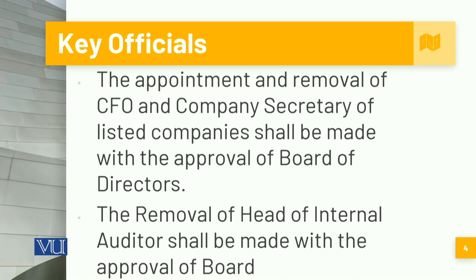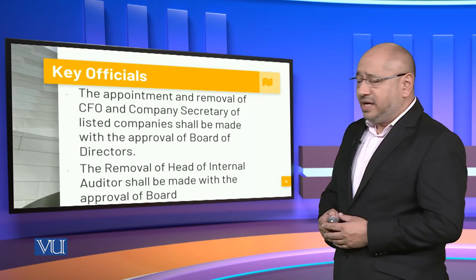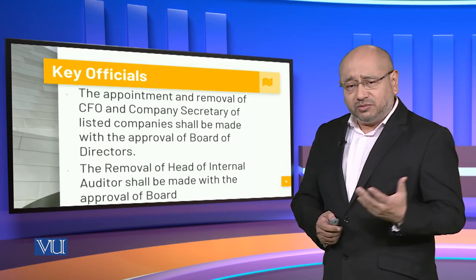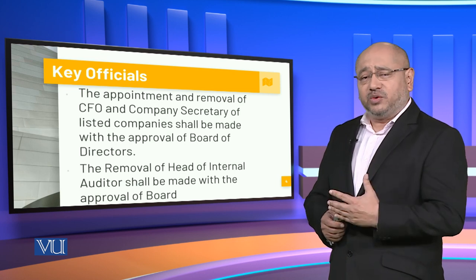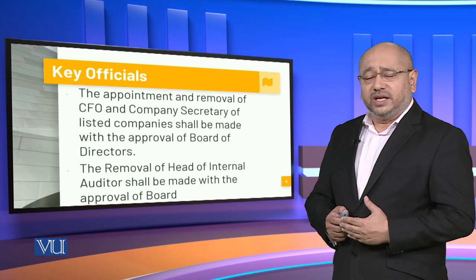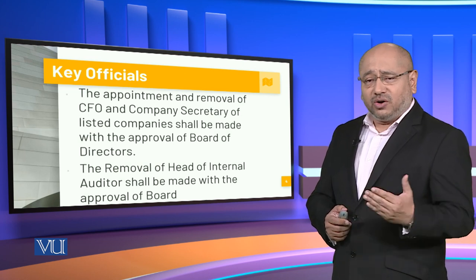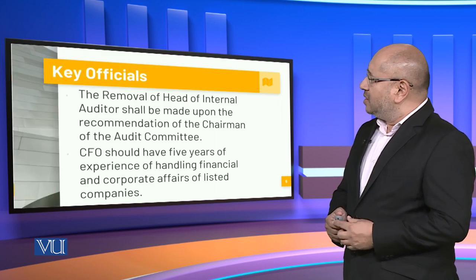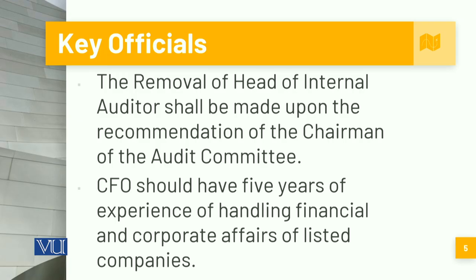The appointment and removal of both of these posts is done with the board of directors. The removal of the head of internal audit should also be made with the approval of the board, so the chief executive officer cannot remove them. This basically gives them the independence by which they can execute their jobs and responsibilities without any fear of repercussions or reprisal by the CEO. The removal of the head of internal auditor shall also be made upon approval by the chairman of the audit committee.